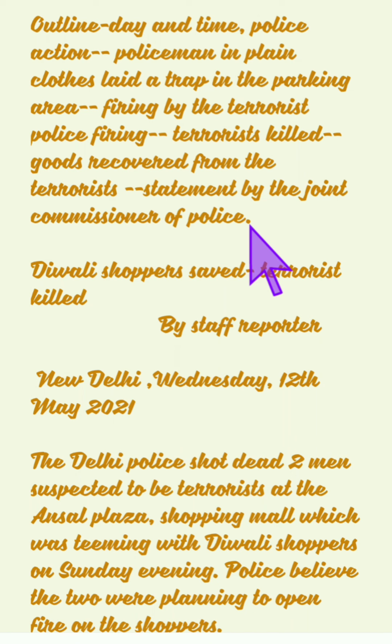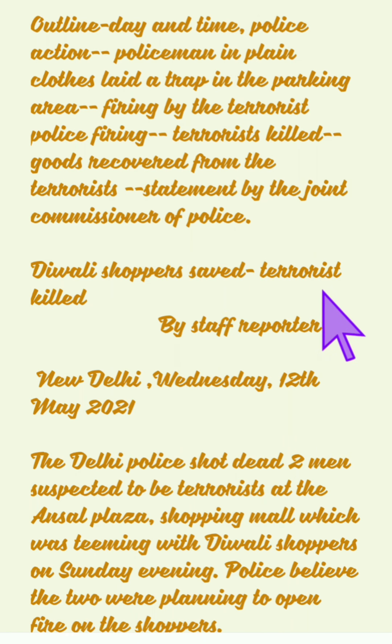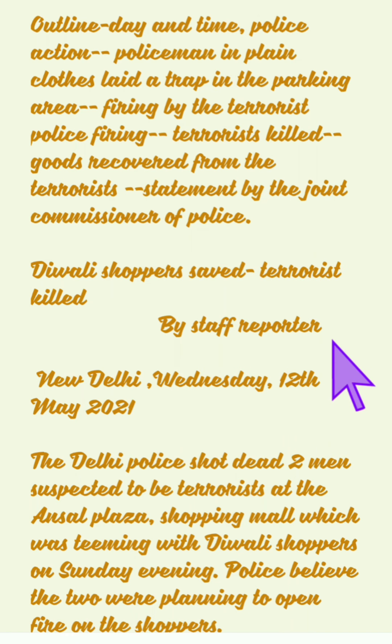These 6 points are given in the outline. You have to elaborate on each of these 6 points in the same order, since they are given in a proper sequence, making 6 different paragraphs. The heading is: 'Diwali Shoppers Saved, Terrorist Killed.'